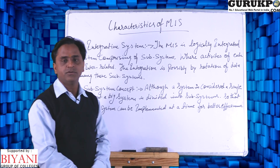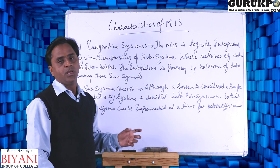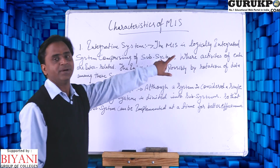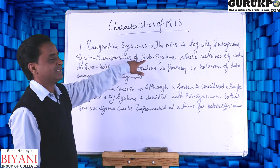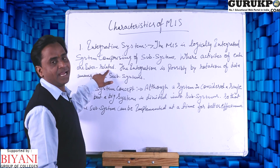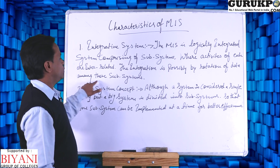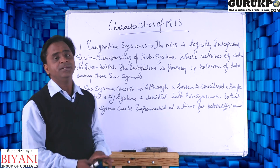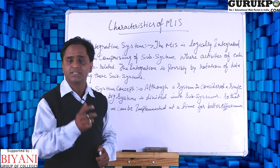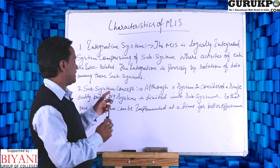First, we discuss the integrative system characteristic in MIS. MIS is a logically integrated system. It can compare its subclasses where activities of each are interrelated. Integration is possible by the rotation of data among those subclasses. The data can be integrated, shared, and connected to each other.